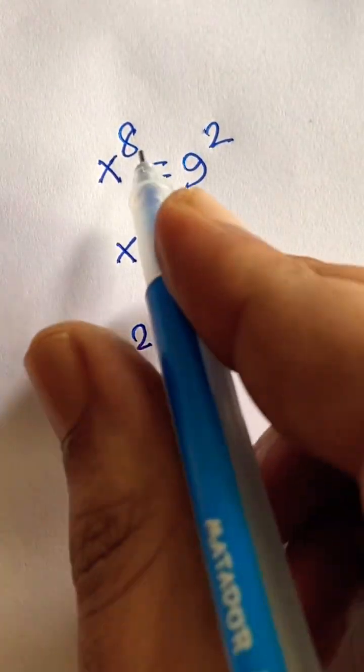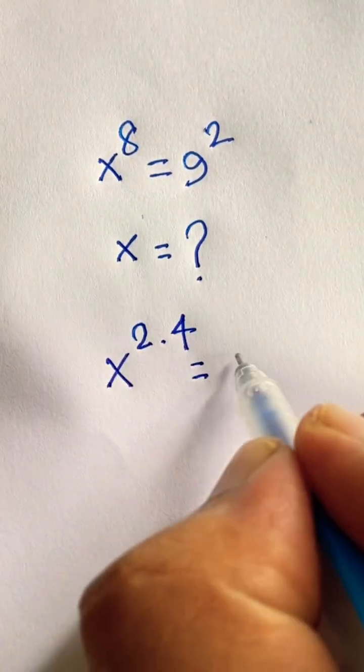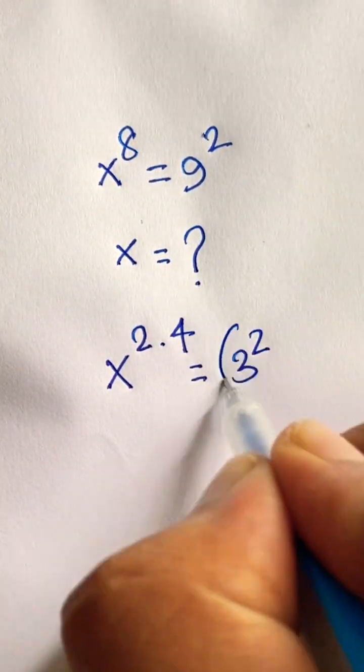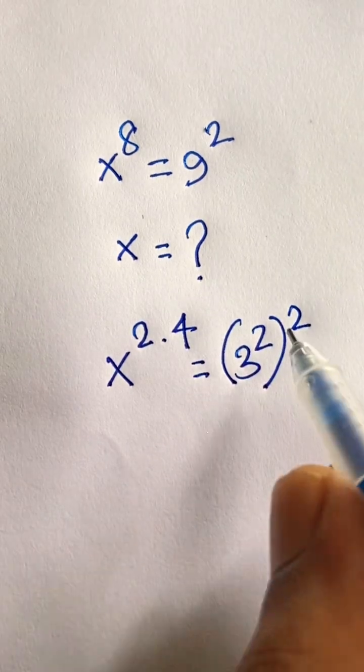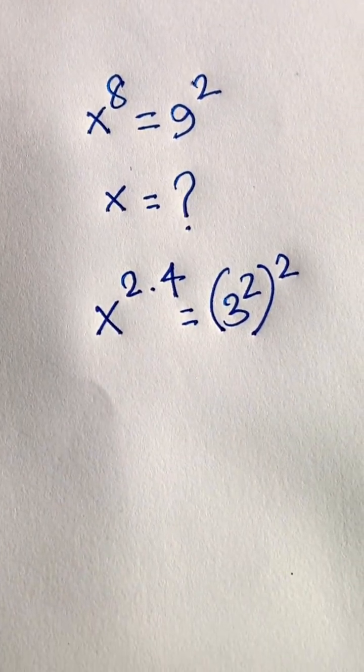2 times 4 equals 8. So x^8 equals 9, which is 3 to the power 2, whole to the power 2. Look, 3 to the power 2 is 9. Then in this expression